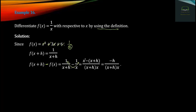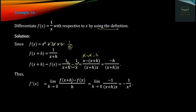As h approaches zero, and if the order is equal to zero, f of x plus h minus f of x equals 1 over x plus h minus 1 over x. So putting x plus h minus x together, we can simplify. We can use x minus x plus x terms. This gives x into x squared, and minus x squared — so the derivative of 1 over x is minus 1 over x squared.